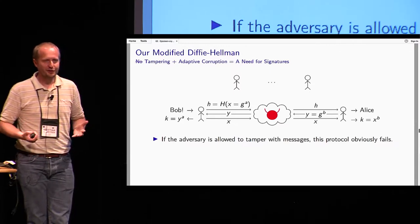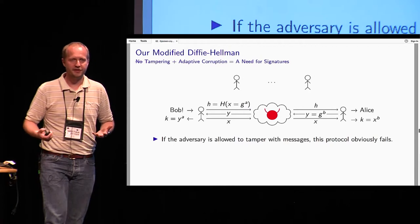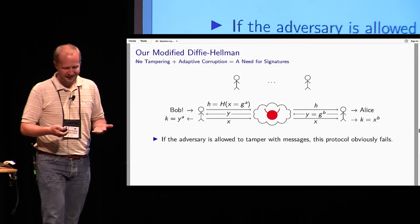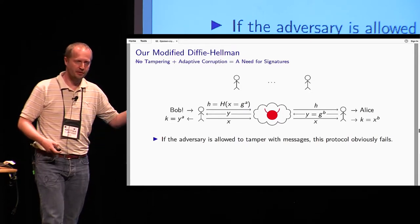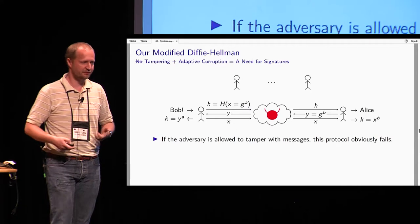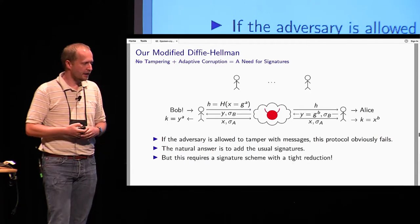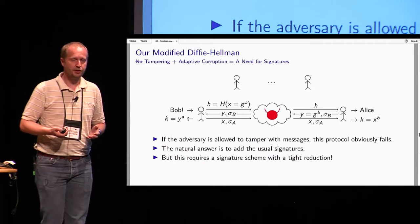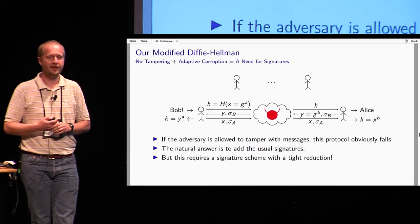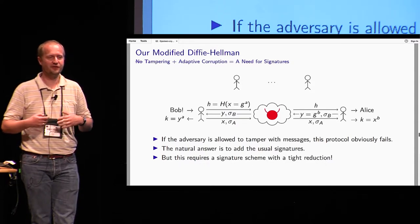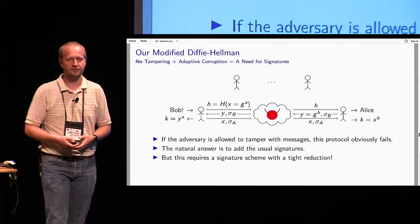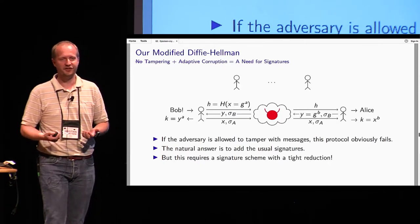I was still working in a model where the adversary promised not to tamper with messages — that's not realistic. If he doesn't keep that promise, my protocol obviously fails; it falls to exactly the same man-in-the-middle attack as ordinary Diffie-Hellman. The natural answer is to use signed Diffie-Hellman. The problem we then run into is that if we throw any old signature scheme at this protocol, we no longer have a tight security proof, because any old signature scheme doesn't have a tight security proof.